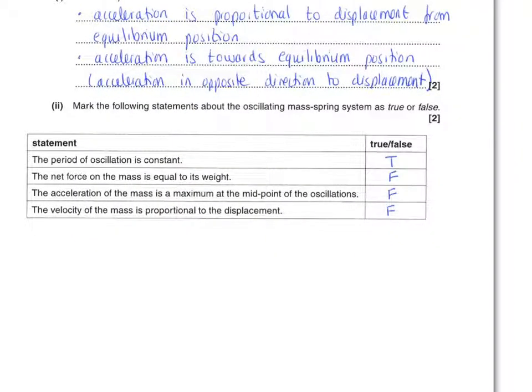Some more checking of your understanding of the terms with a true or false question. So for this mass spring system, we ask ourselves, is the period of oscillation constant? The answer is yes, it is. The amplitude may well decrease over time. But you need to remember that things that oscillate with simple harmonic motion have an isochronous oscillation. And that term means that the time period stays constant.